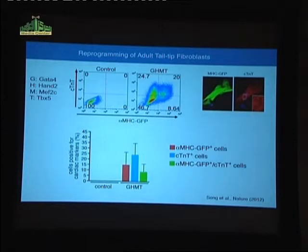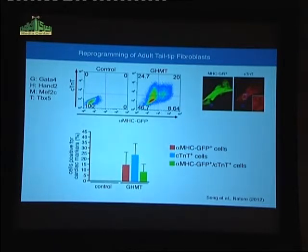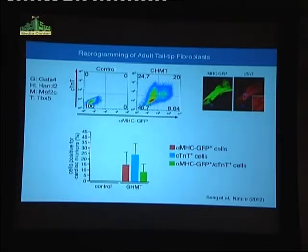This is what a typical assay looks like. Fibroblasts isolated from the tail tip of these transgenic mice express zero alpha-MHC GFP and zero cardiac troponin T. If we infect them with GHMT, you can now see that these cells have migrated to positive channels and express quite robust levels of these cardiac markers. With time in culture, their cytoplasms begin to organize, and by about four weeks, they show the classical striated sarcomeric appearance of adult cardiac myocytes, and a small subset will beat spontaneously in culture.